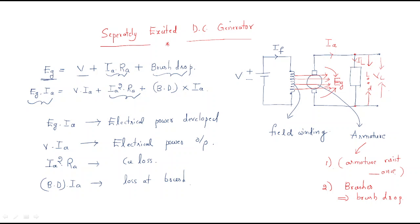In the last session we discussed about the separately excited DC generator. Whenever a field supply is given, flux flows through the armature winding, then the armature cuts the flux and an EMF is induced. That EMF is collected by the load. This is the input power for the generator and this is the output power.